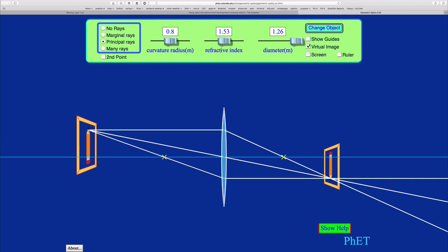A third principal ray will be one that goes from the tip of the pencil through the focal point here and then to the lens. And light that goes through this focal point to the lens will then travel parallel to the optical axis along here. It's kind of the same as this ray here just in the other direction. So these three rays will meet up at the image plane.